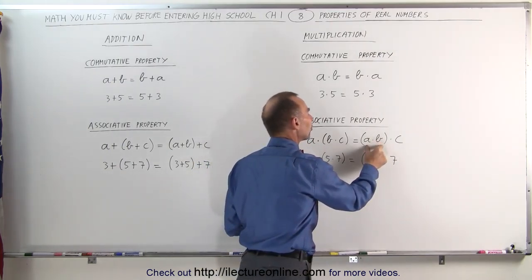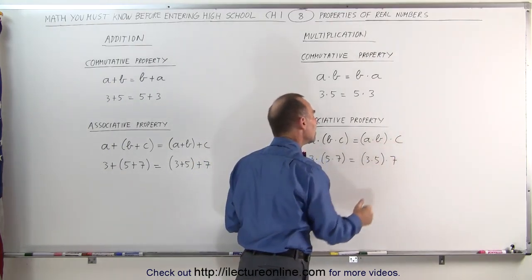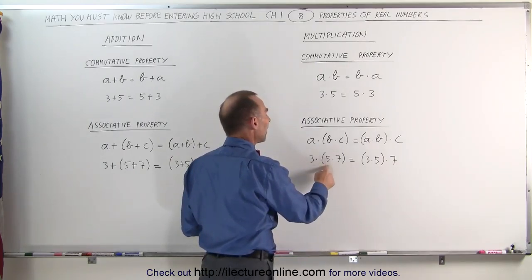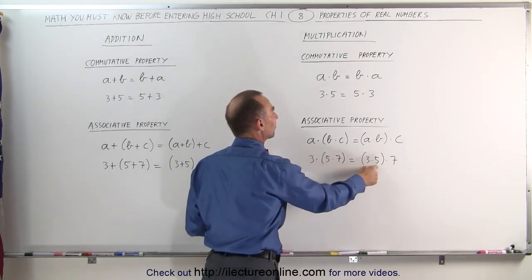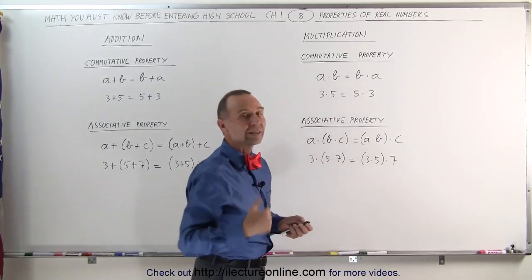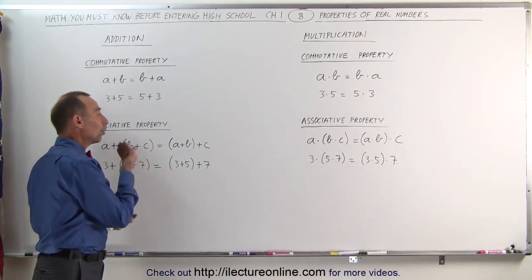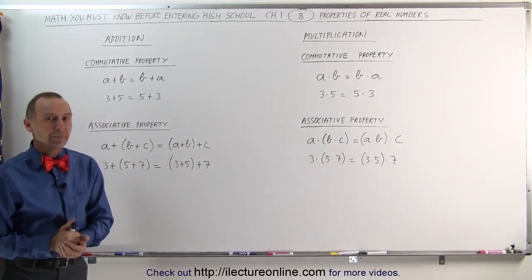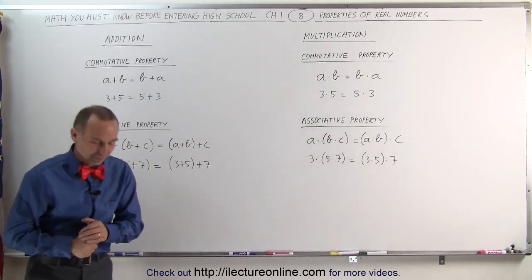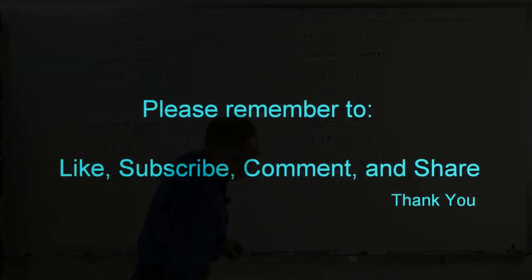Again, with multiplication, the same is true. The associative property means we can group numbers together first. We can multiply B times C first before we multiply that times A, or we can multiply A times B first before we multiply it times C. As an example, 3 times 5 times 7 is the same as 3 times 5 times 7. You will always get the same result.